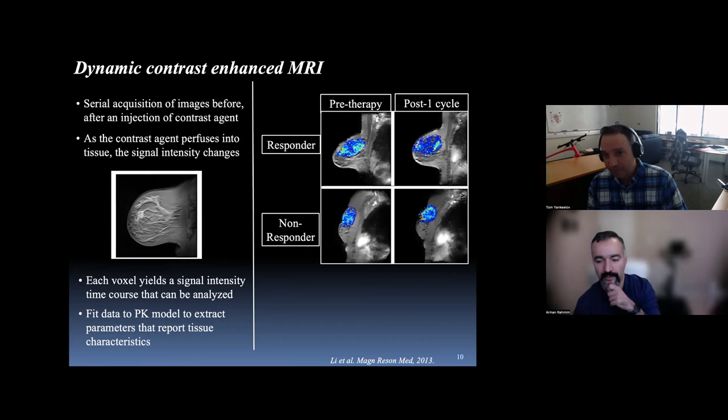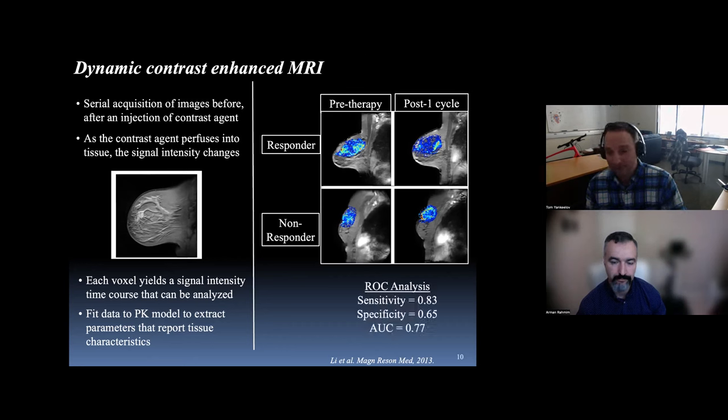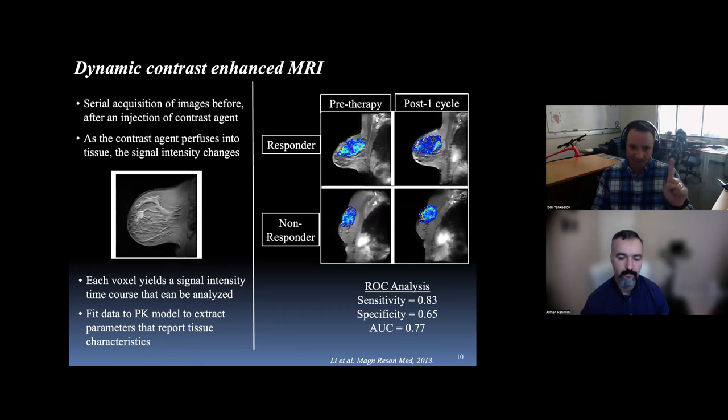So each voxel in this time course or in this image is going to give you a signal intensity time course that you can then analyze with a standard pharmacokinetic model to get these parameter maps out. And this stuff is kind of old news now. But here's a responder versus a non-responder. So this is locally advanced breast cancer. And responder means at the end of neoadjuvant therapy, pre-surgical therapy, there's no viable tumor left in the breast or the axillary lymph nodes. As opposed to a non-responder where there is residual disease.